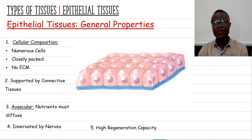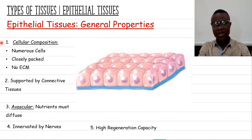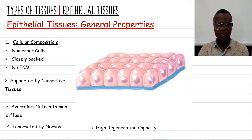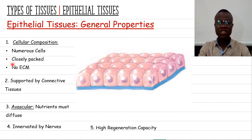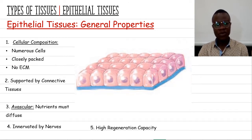What distinguishes epithelial tissue from other types of tissue? First, regarding cellular composition: unlike other types, epithelial tissue is predominantly made of cells — meaning there are numerous, closely packed cells. Additionally, epithelial tissue has little or no extracellular matrix. These are the basic characteristics that distinguish it from other tissues.